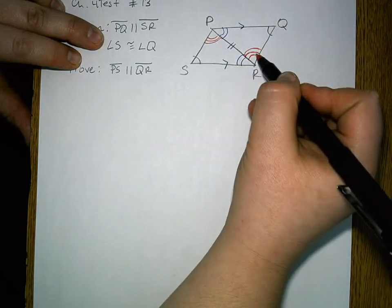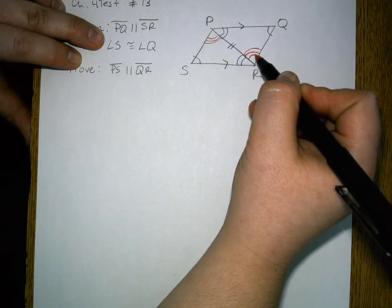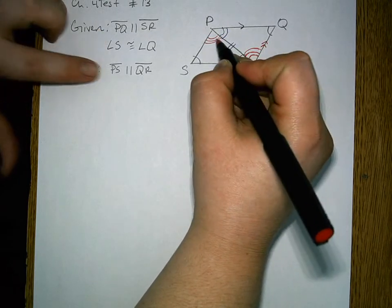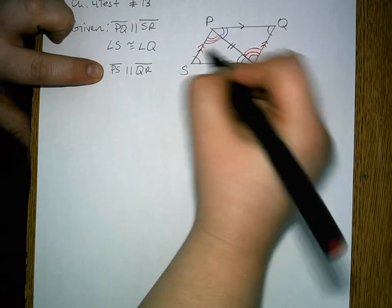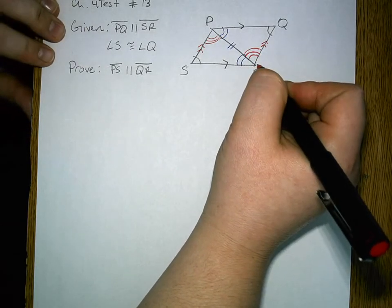and then finally prove that PS is parallel to QR by the converse of the alternate interior angles theorem.